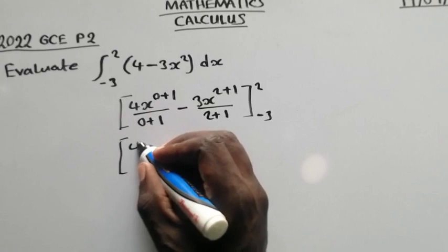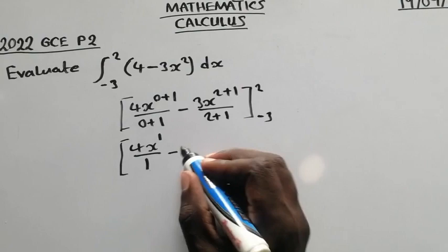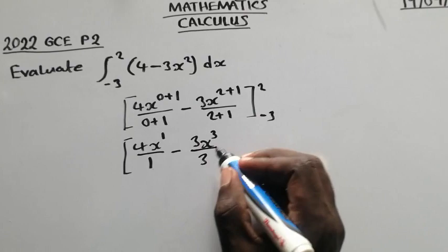So now this one will be 4x to the power 1 over 1 minus 3x to the power 3 over 3.